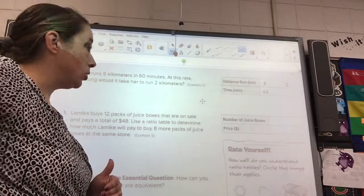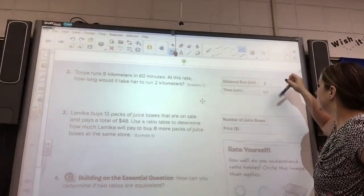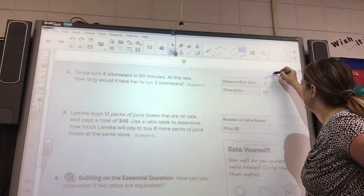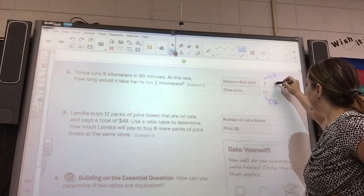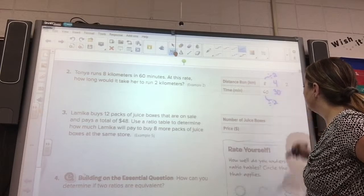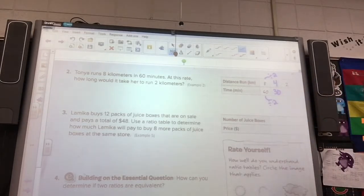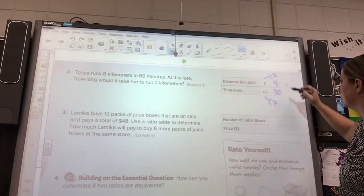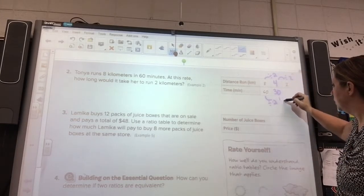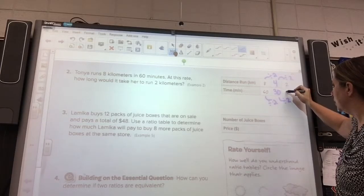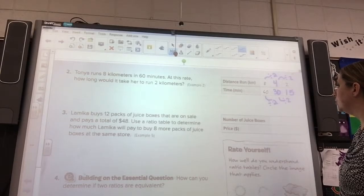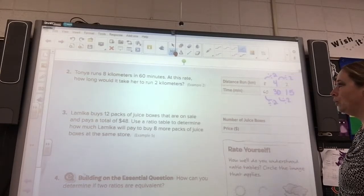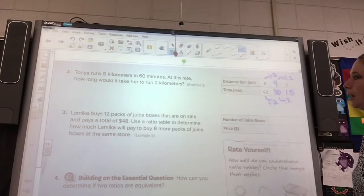I think we could divide by 2. If we divide by 2, we would get 4 and 30. So, now, how are we going to get from 4 to 2? Divide by 2 again, and we get 15. So, there's two 15s in 30, two 2s in 4, and so, for 2 kilometers, it would take her 15 minutes.